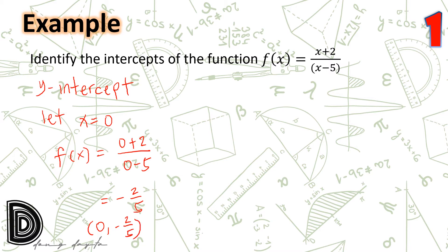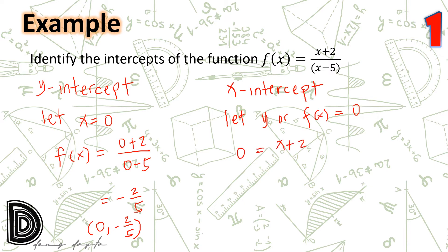Let us find the x-intercept of this function. At the x-intercept, y is equal to zero. Hence, we let f(x) equal zero. So we have 0 = (x+2)/(x−5). Multiplying both sides by (x−5), we get 0 = x+2. Adding negative 2 to both sides gives x = −2. Hence, the x-intercept of this rational function is at (−2, 0).